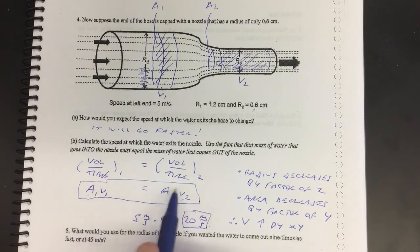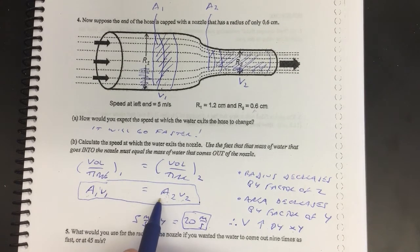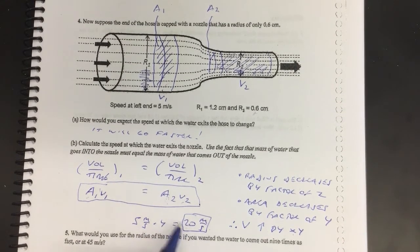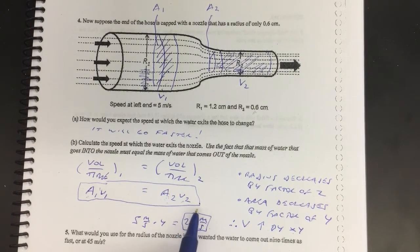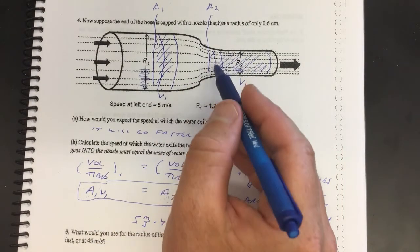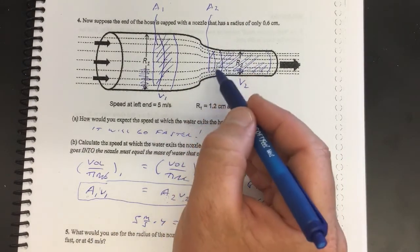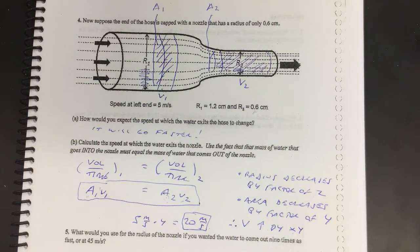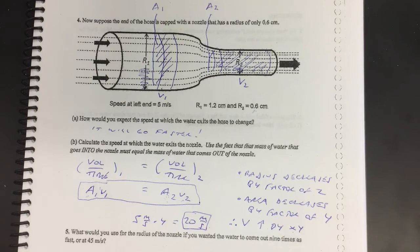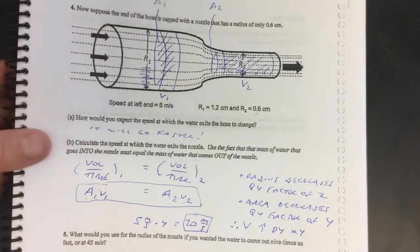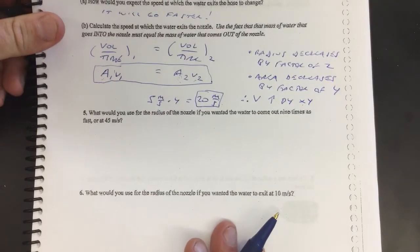Okay, so you could have come up with this by literally plugging in pi r1 squared here and five, and then you can do pi r2 squared here and then leave this as an unknown and solve and you'll get 20. But this is just faster to go, hey, I cut the radius by factor two, so I cut the area by factor four, so the speed then has to go up by factor four. So very very easy.